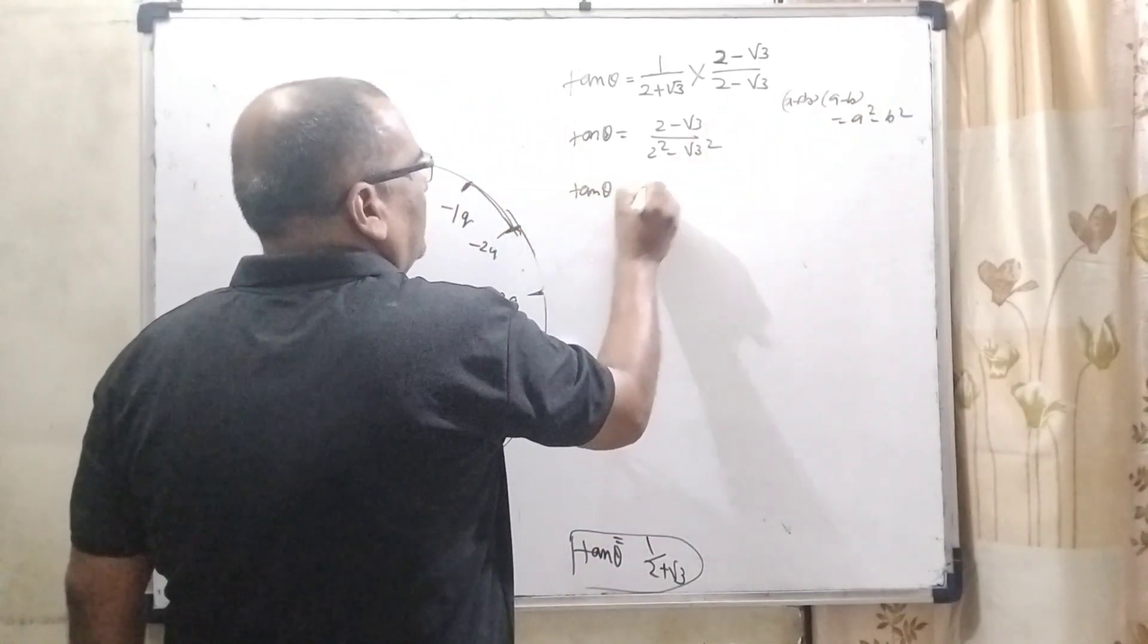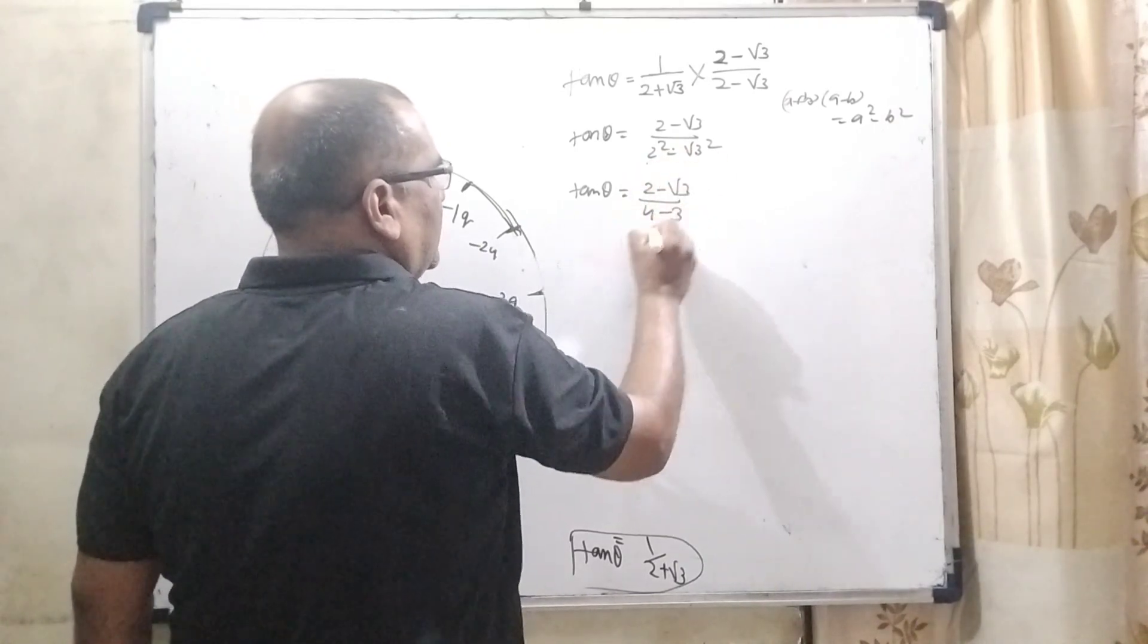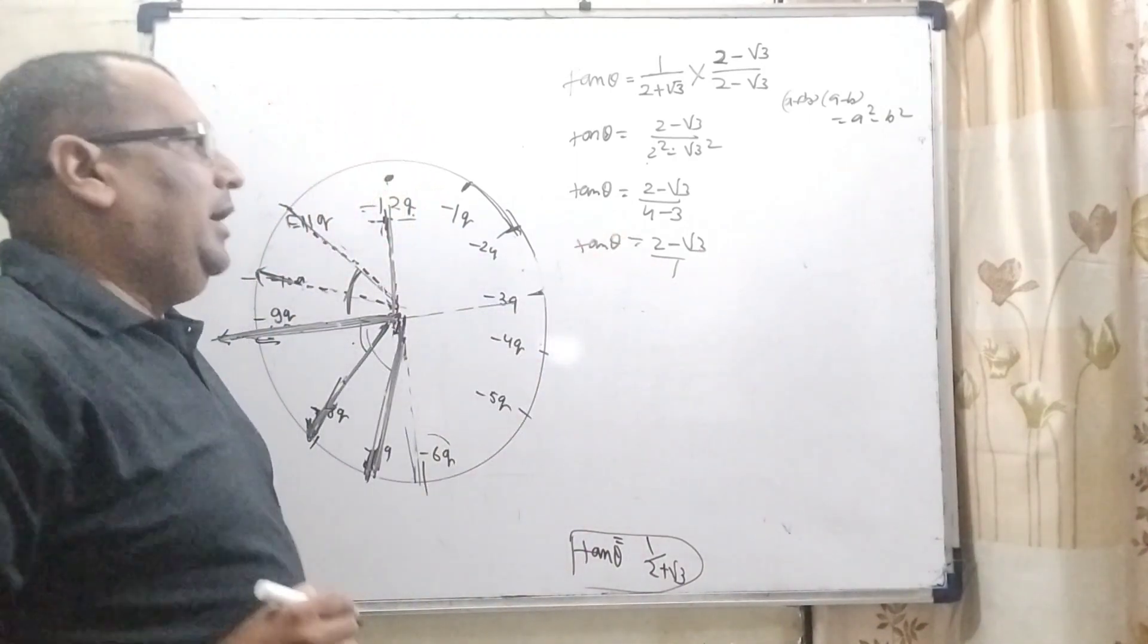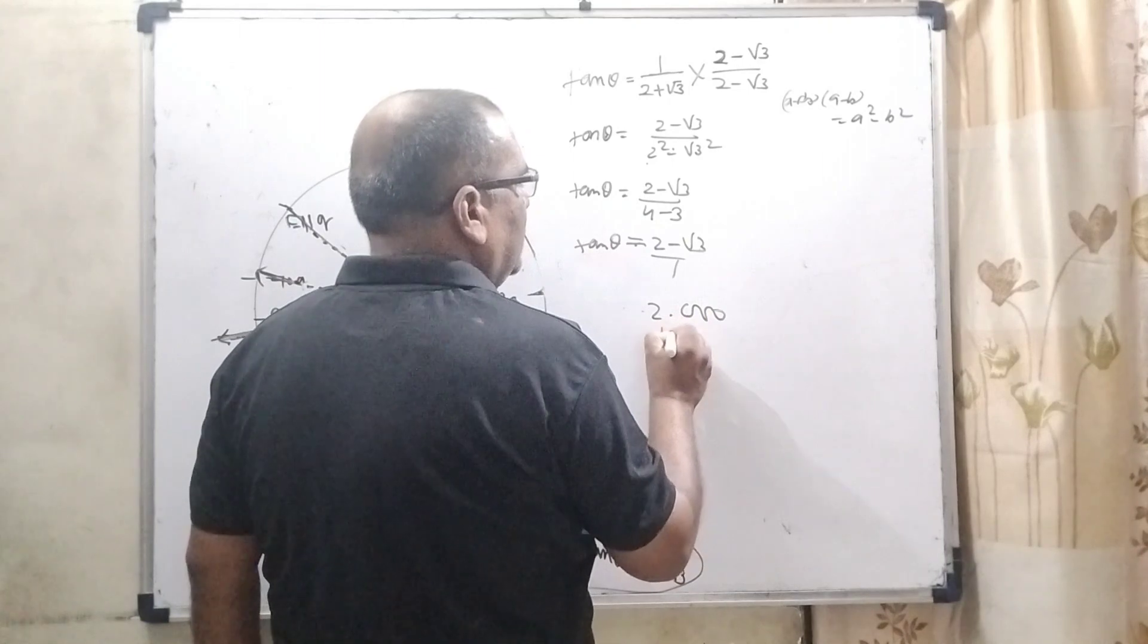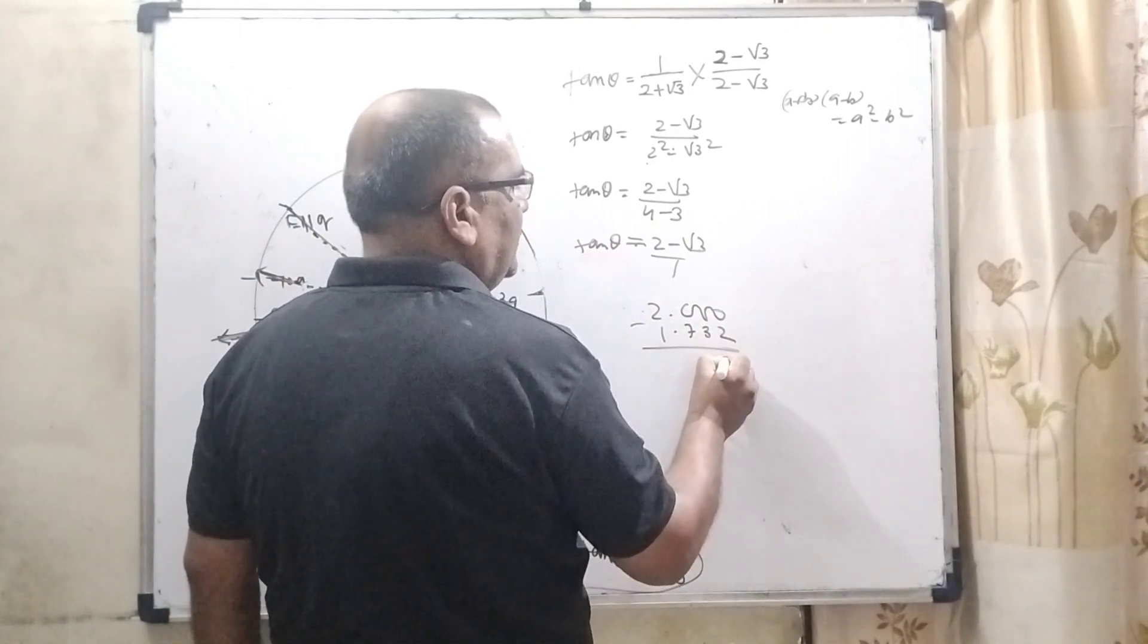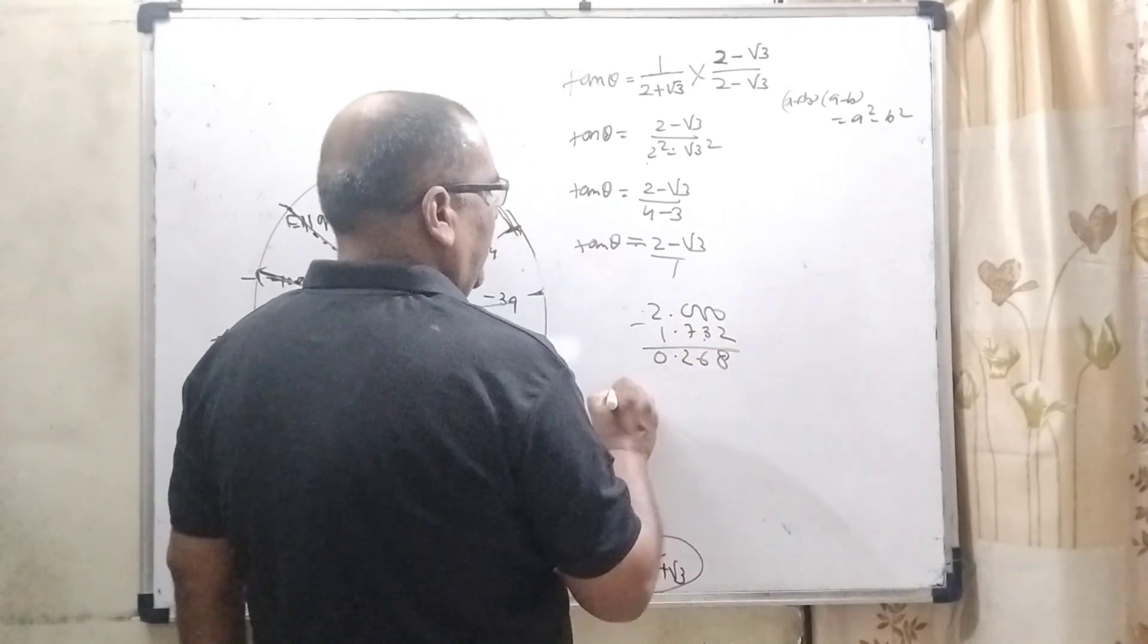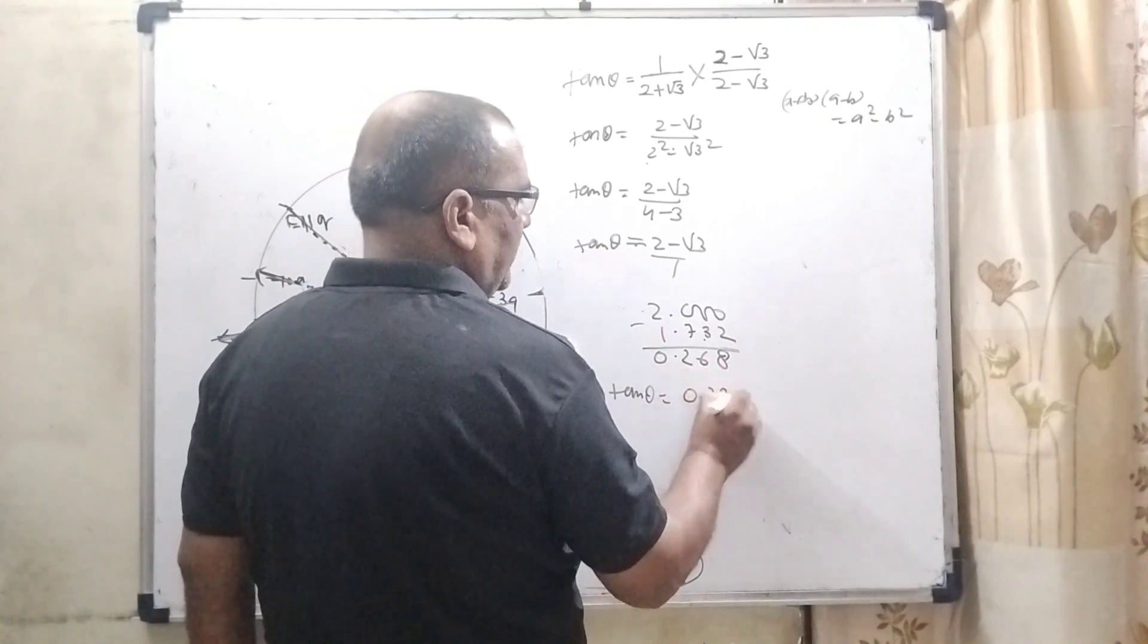So tan theta is equal to 2 minus root 3, 2 square that is 4, root 3 square that is 3, then 2 minus root 3. And we know that the value of root 3 is 1.732. Then subtracted, then we get 0.268. So here approximately 0.27.